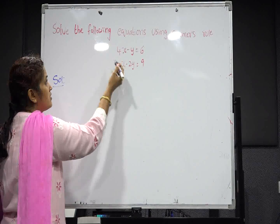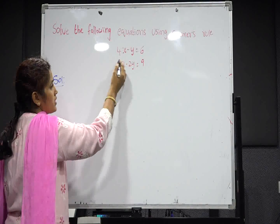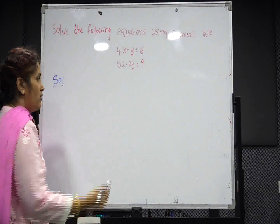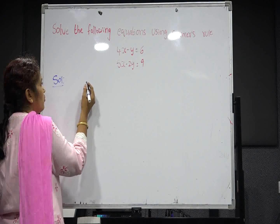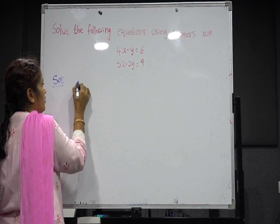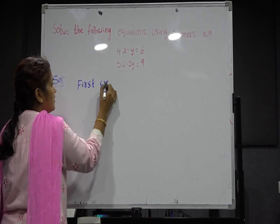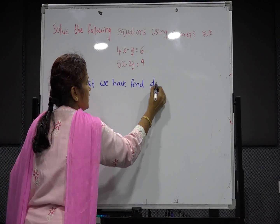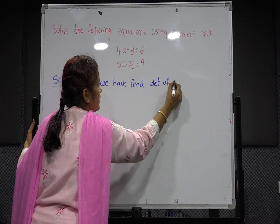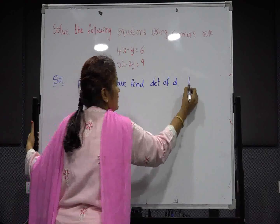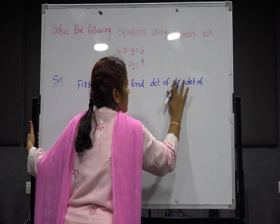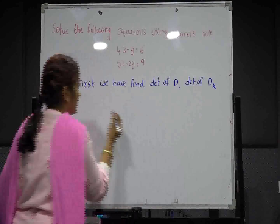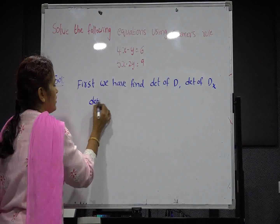Today these two equations are given: 4x minus y equals 6, and 5x minus 2y equals 9. For this you have to find the values of determinant of D, determinant of Dx, and determinant of Dy.